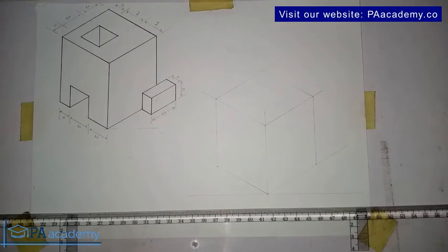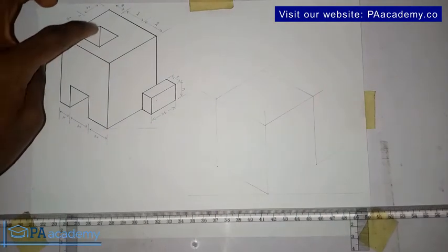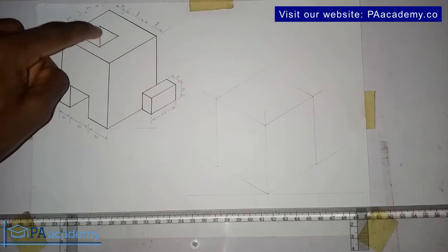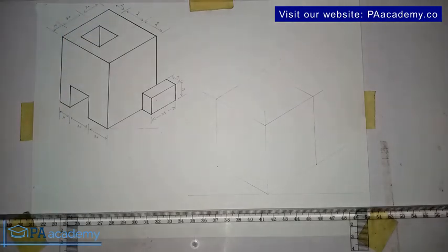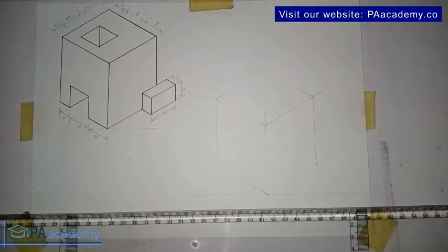Alright so now that we've gotten that, the next thing I want us to do is to draw this one that is at the top here. But before we draw the one at the top, I want us to draw out the square itself so that we can see the progress we've made so far.